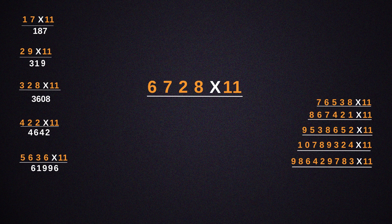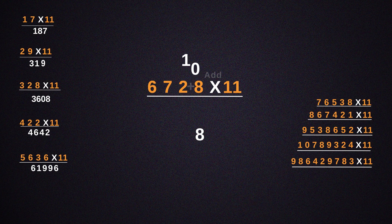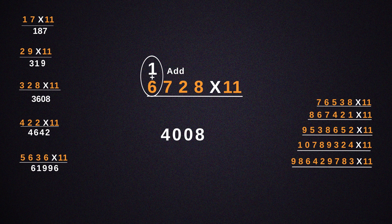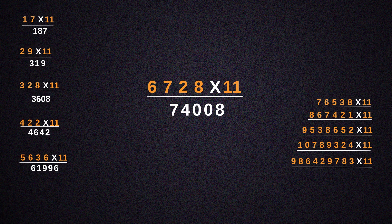Now let's look at 6,728 into 11. Write 8 as it is. Then take the sum of 2 and 8, which gives us 10. Write 0 in the answer and the 1 gets carried over. 7 plus 2 is 9, plus 1, that is again 10. So write 0 in the answer and 1 again gets carried over to the next digit. That gives us 14, so write 4 in the answer. And 1 gets added to 6. So finally, this gives us an answer of 74,008.